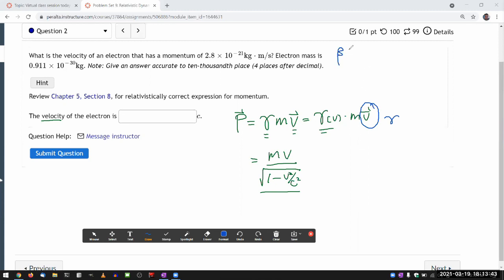So using the symbol beta which I introduced to keep stop writing down c all the time. In terms of beta, gamma is equal to one over square root of one minus beta squared.